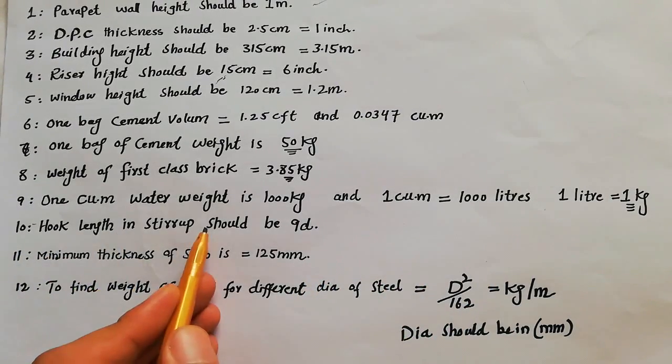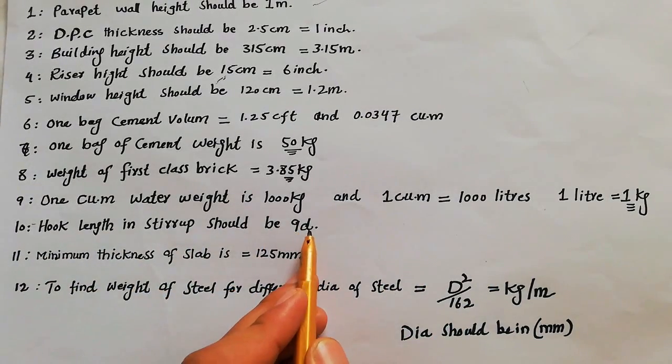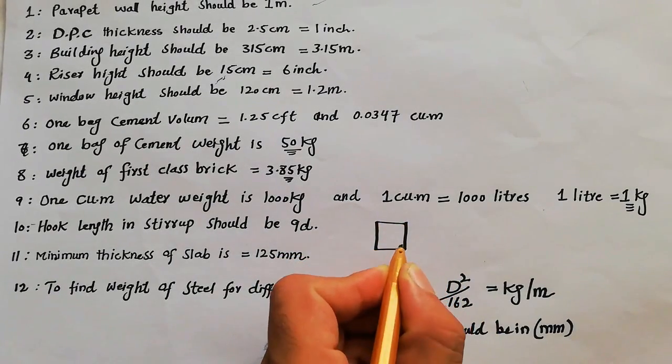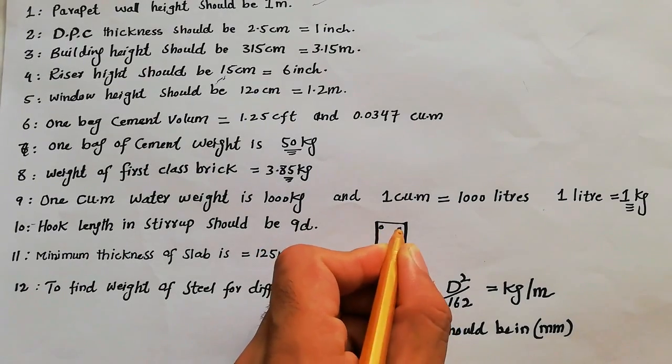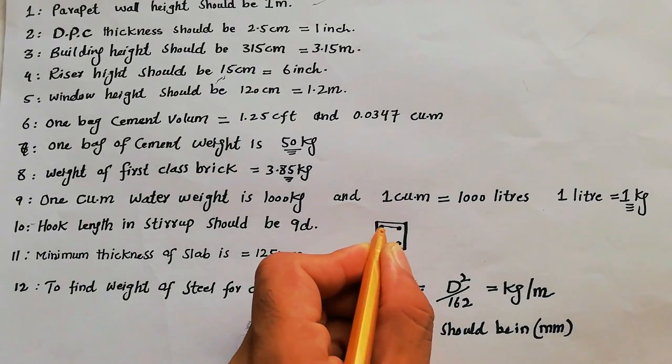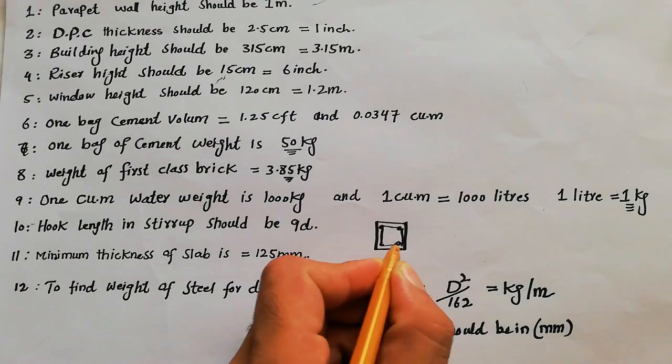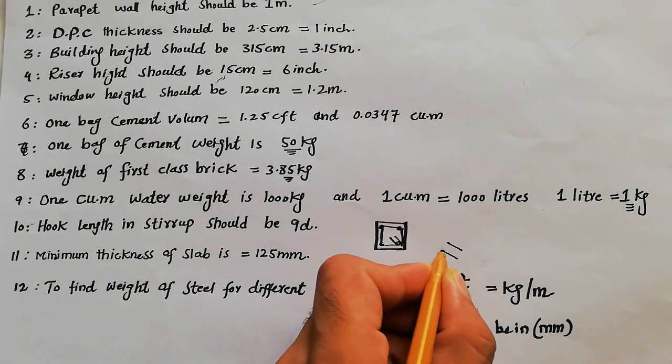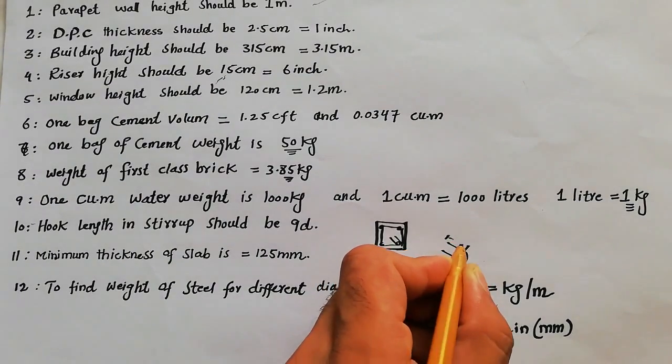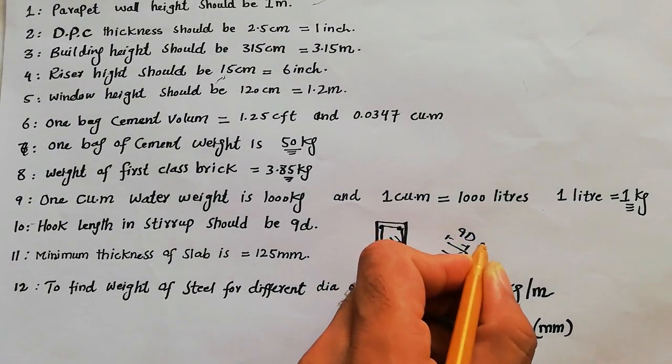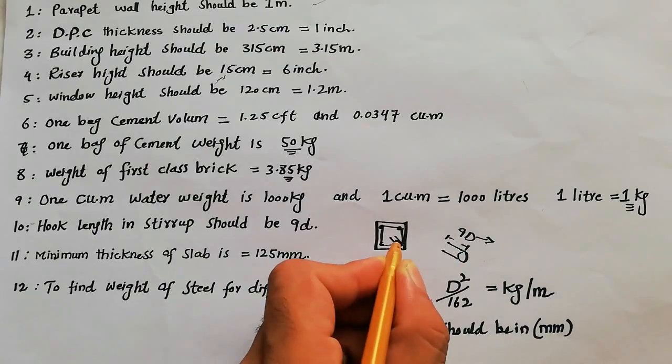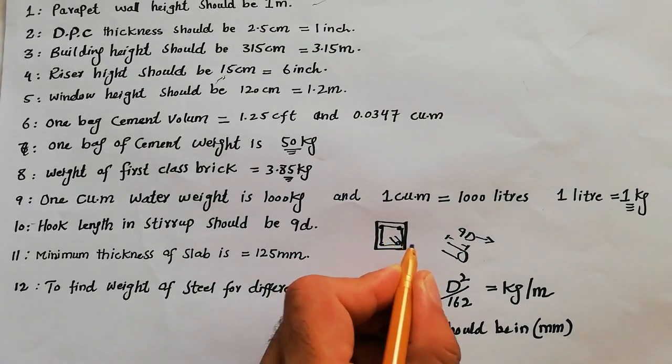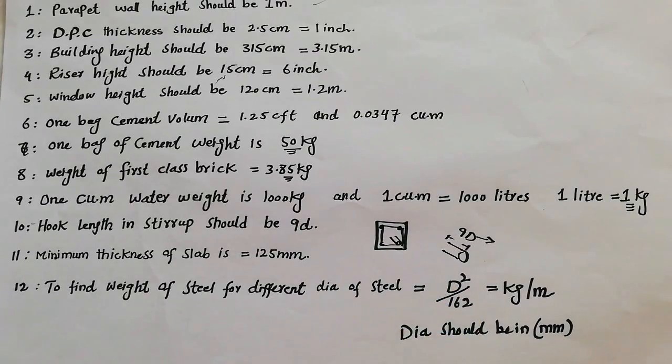Hook's length in stirrup should be 90d. What is hook's length? So this is stirrup. When we provide steels here, this is called stirrup. So we provide here hooks. These hooks length should be 90d, where d is the diameter of stirrup which we use in column. Diameter of stirrup, not diameter of longitudinal bars.